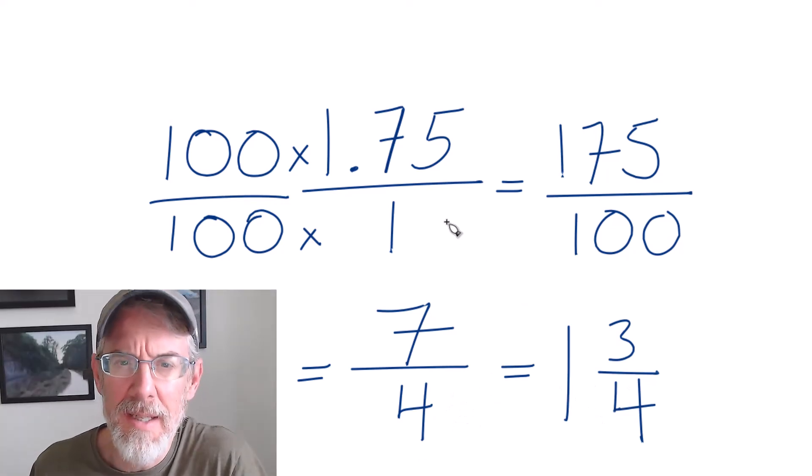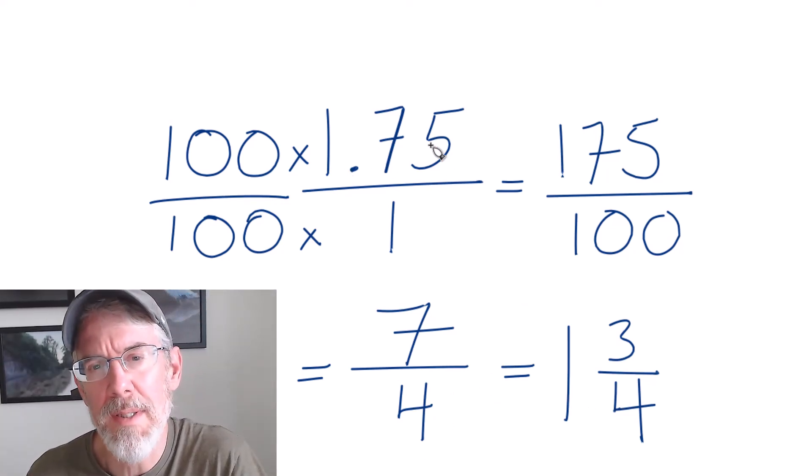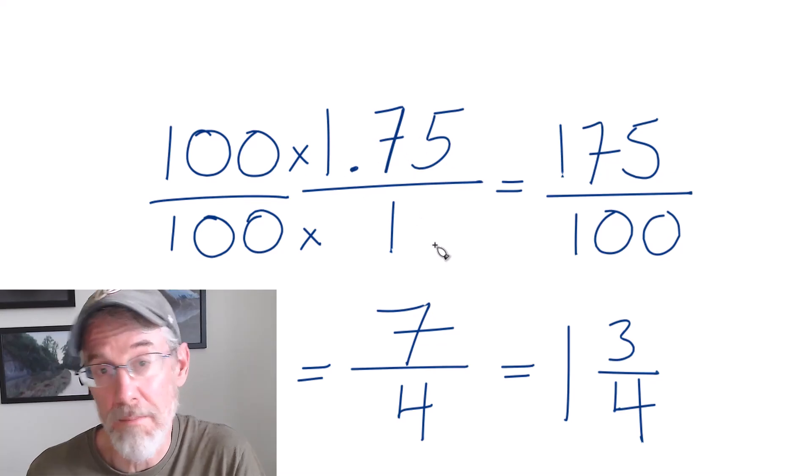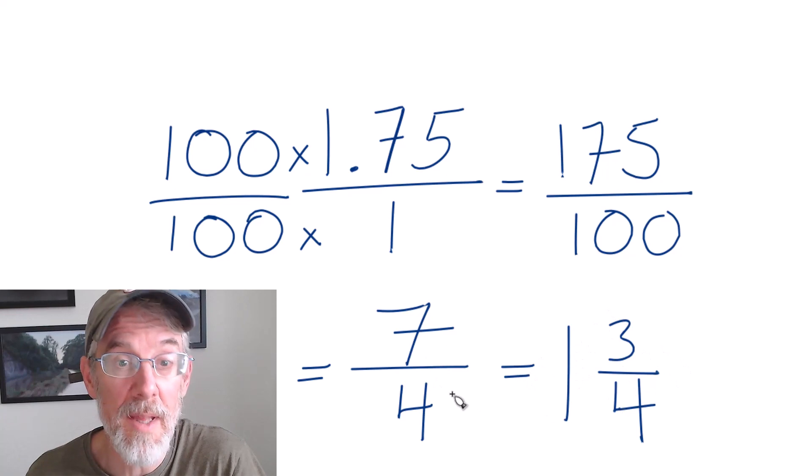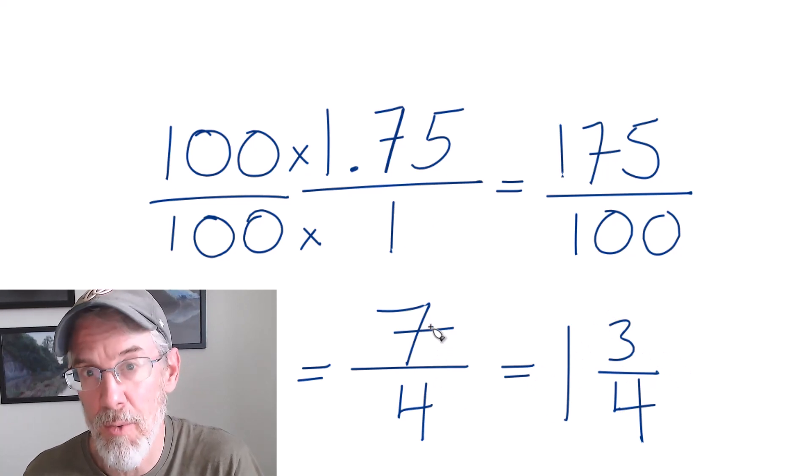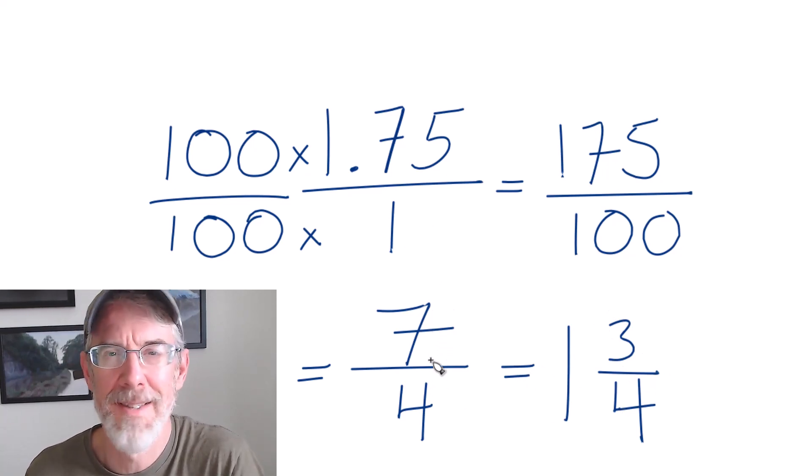This is Dr. B converting the decimal 1.75 to a fraction. The answer is 7 fourths, or you could call it 1 and 3 fourths. These three things are the same, they're equivalent, just written a little bit differently. Thanks for watching.